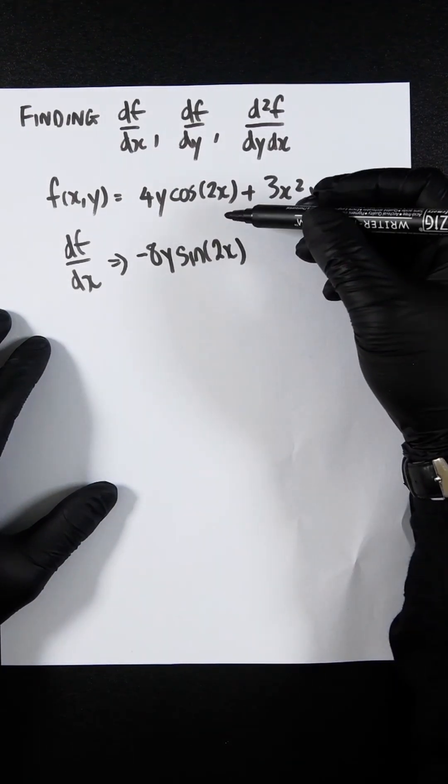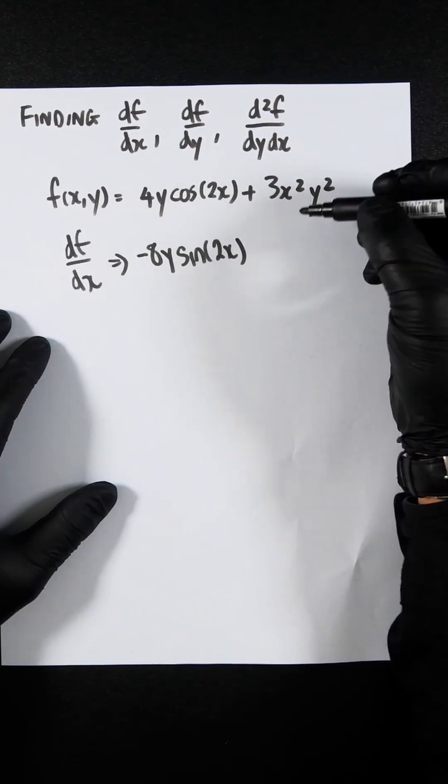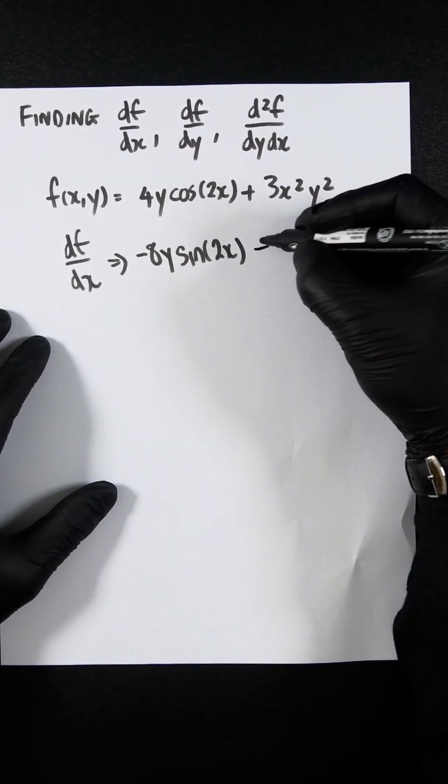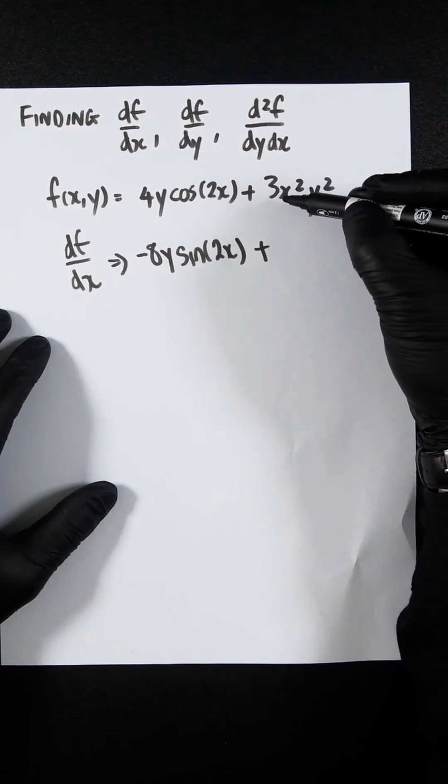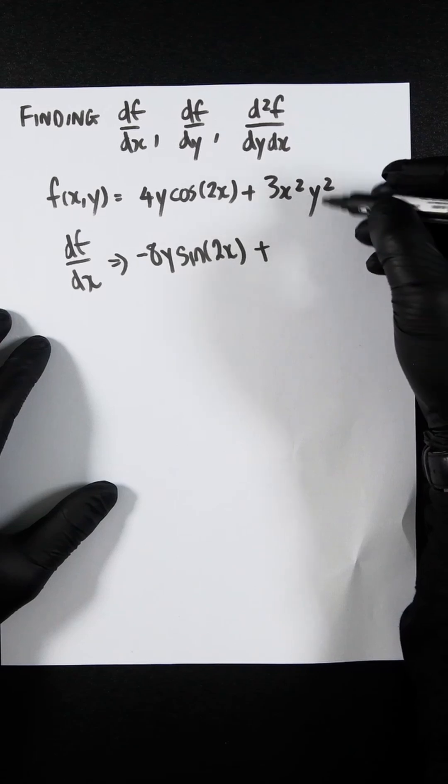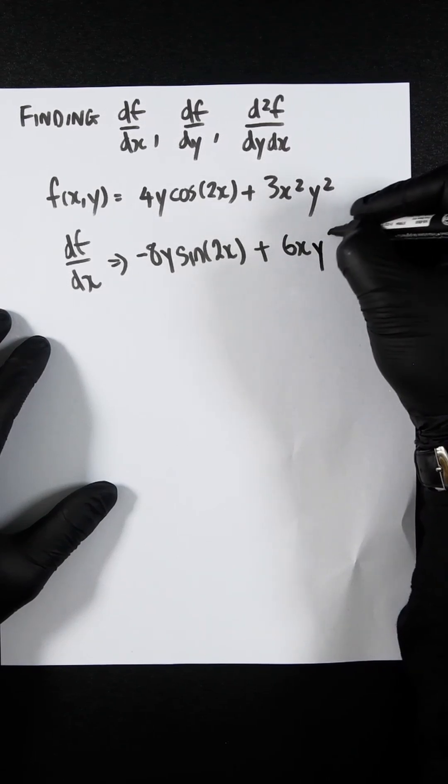If you're unfamiliar with the chain rule, it's linked in the description. You need to know how to do it. Then for the second part, we would just ignore the y² for now and differentiate 3x². So that would be 6x, and then we just multiply in the y².